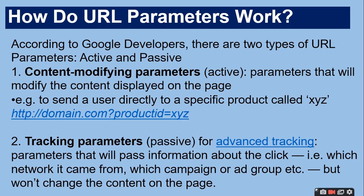Do you know how URL parameters work? According to Google Developer, there are two types of URL parameters: active and passive. The first type is active URL parameters — content modifying parameters — that will modify the content displayed on the page.